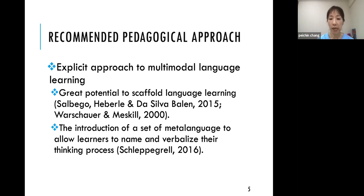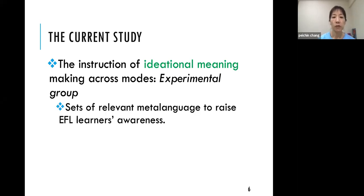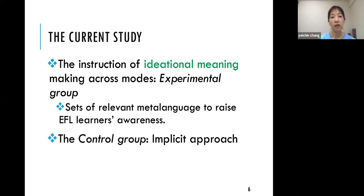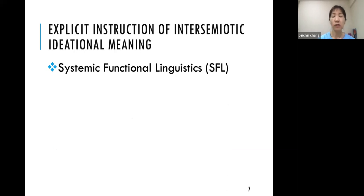An explicit approach has great potential to scaffold language learning and basically involves introducing a set of metalanguage to allow learners to name and verbalize their thinking and learning. In my study, I focus on ideational meaning for the experimental group, using relevant metalanguage to raise EFL learners' awareness. The control group uses a more implicit approach — they are offered similar sets of visual resources but without the metalinguistic labels.